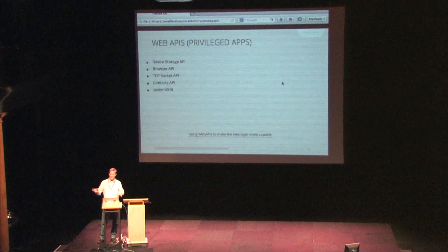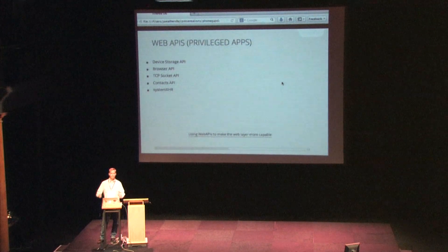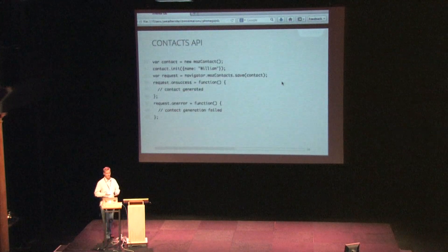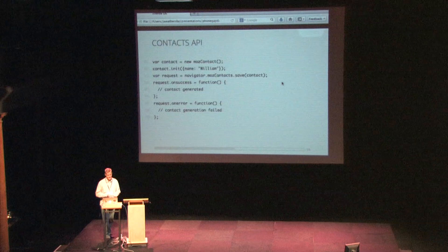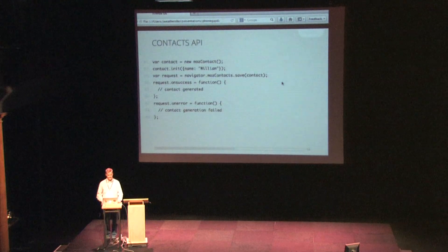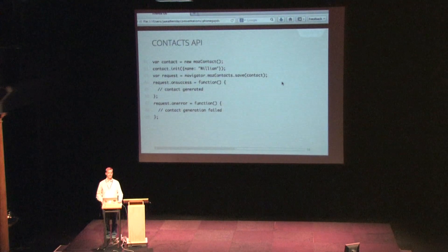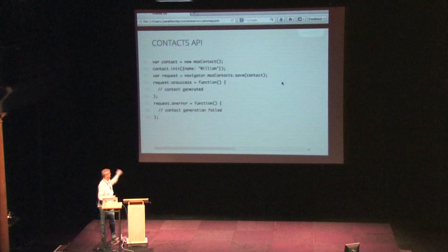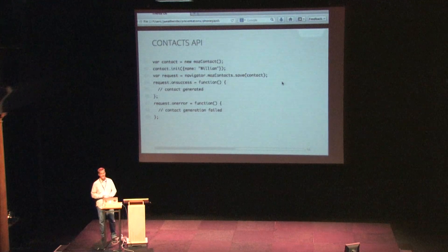A privileged app is nothing more than adding one little field in the manifest and then running it through Mozilla's marketplace. Here's an example of using the contacts API: just create a MozContact, create the name, save it, and it shows up in your contacts list. Now, if you're not privileged, how do you add a contact?